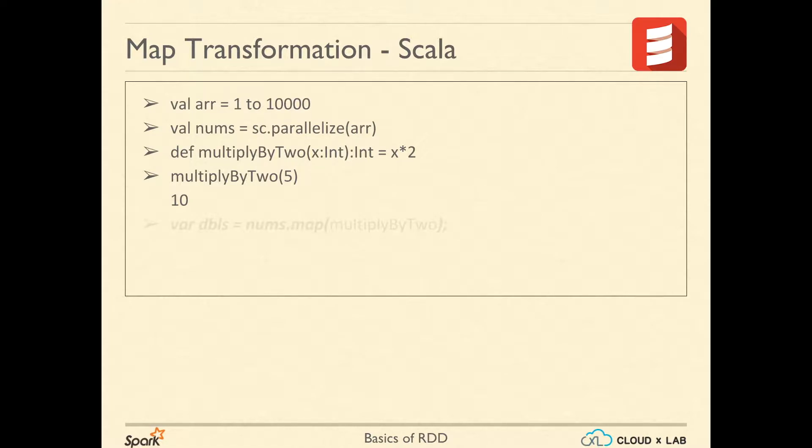Now, let's call this function on RDD by the way of map. We execute nums.map and pass multiply by 2 as argument. Notice that we are passing a function as argument as if it's the data. This would return another RDD which we have named as DBLS.